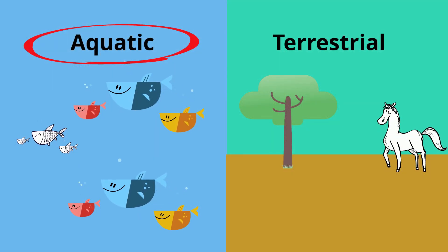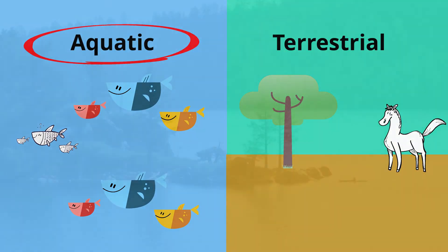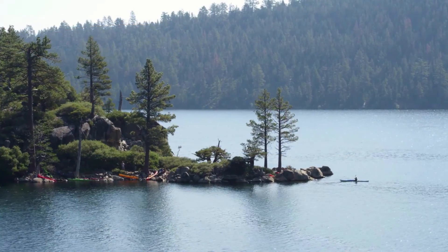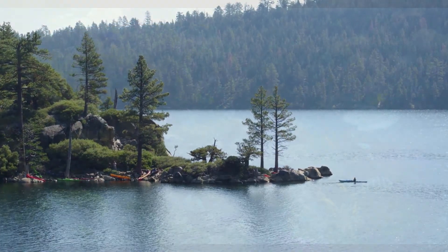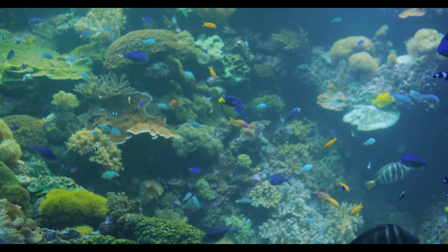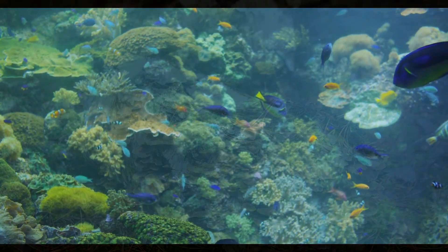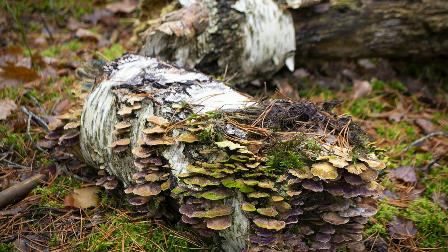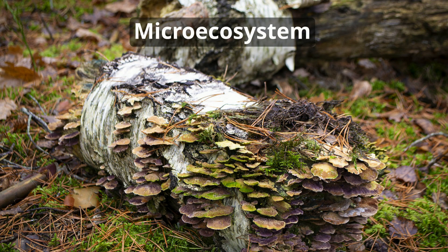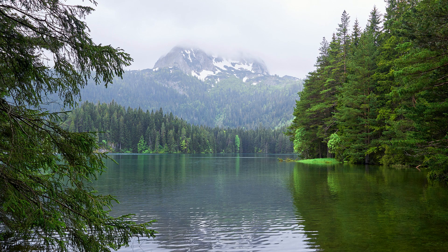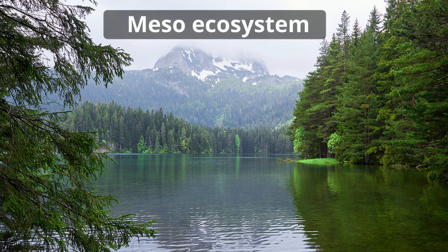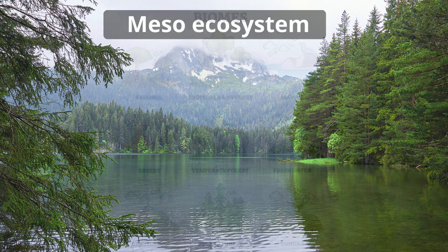An aquatic ecosystem is water-based, much like this lake, river, or coral reef. A small ecosystem, like this rotting log, is called a micro-ecosystem. A medium-sized ecosystem, like a large lake, is a meso-ecosystem.